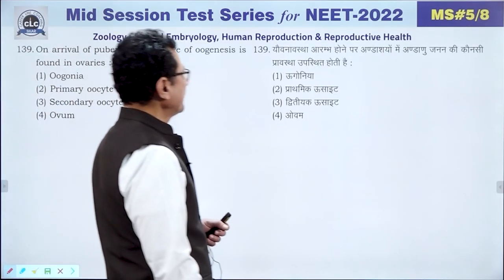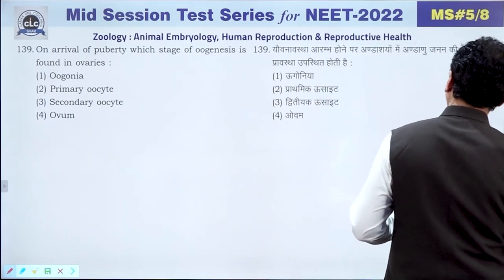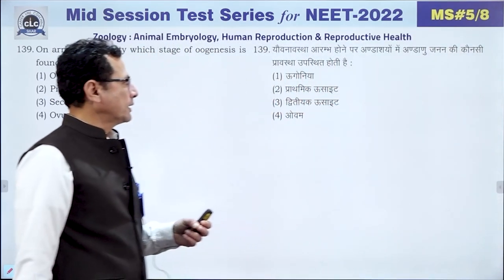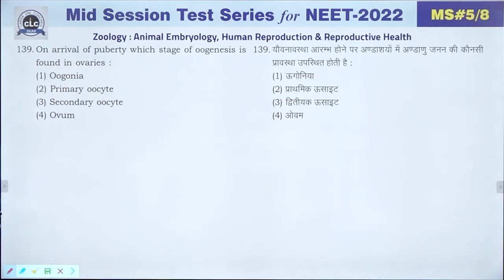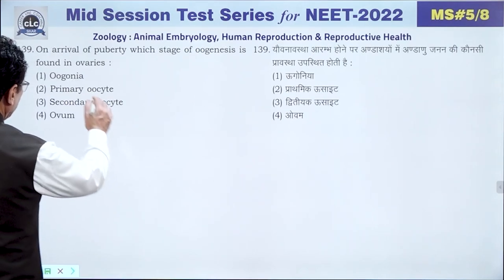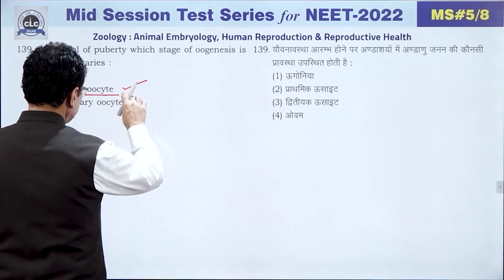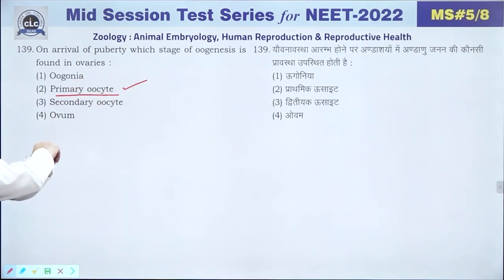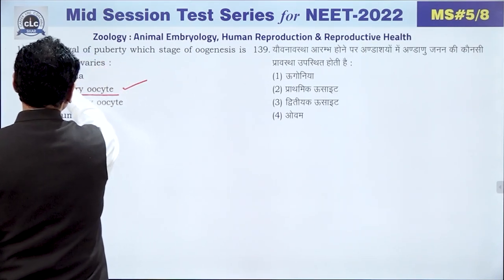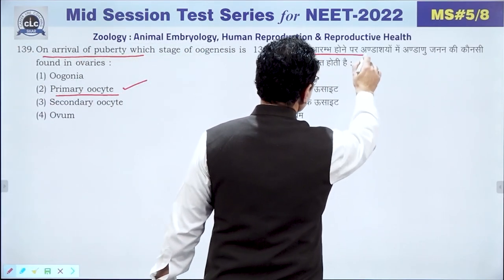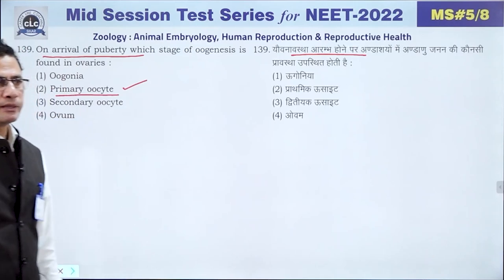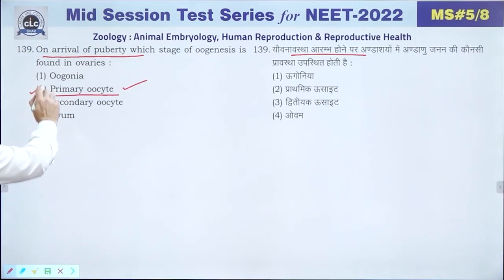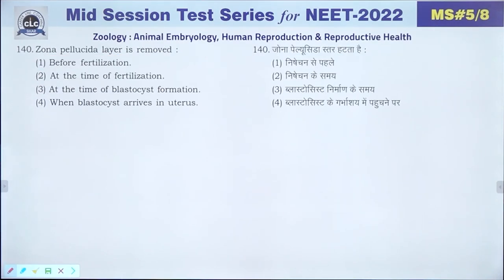Question 139: On arrival of puberty, oogonia are not found in the ovaries. Primary oocytes are present at puberty. Secondary oocytes form later. The answer is 2 — primary oocytes are present at puberty.